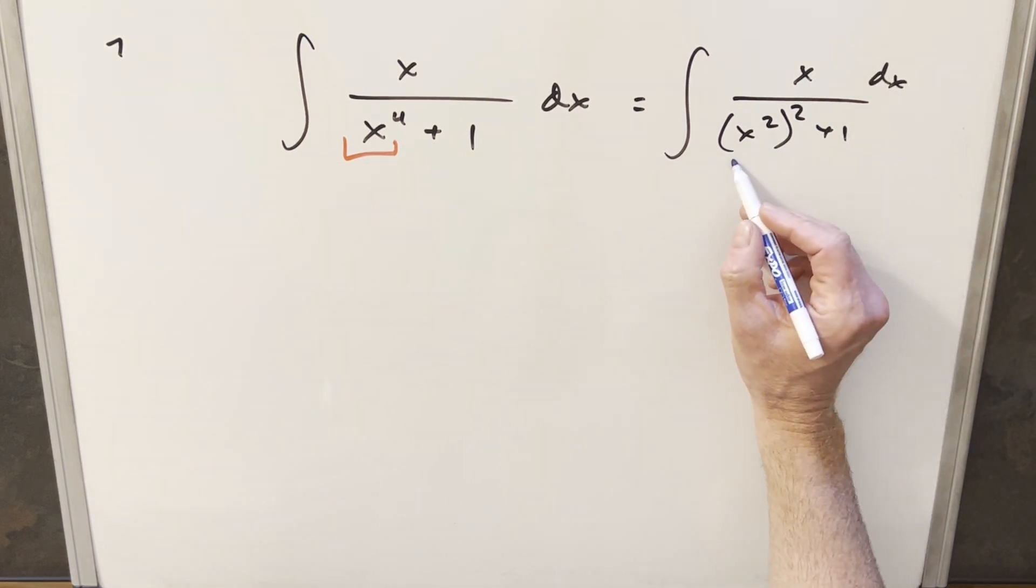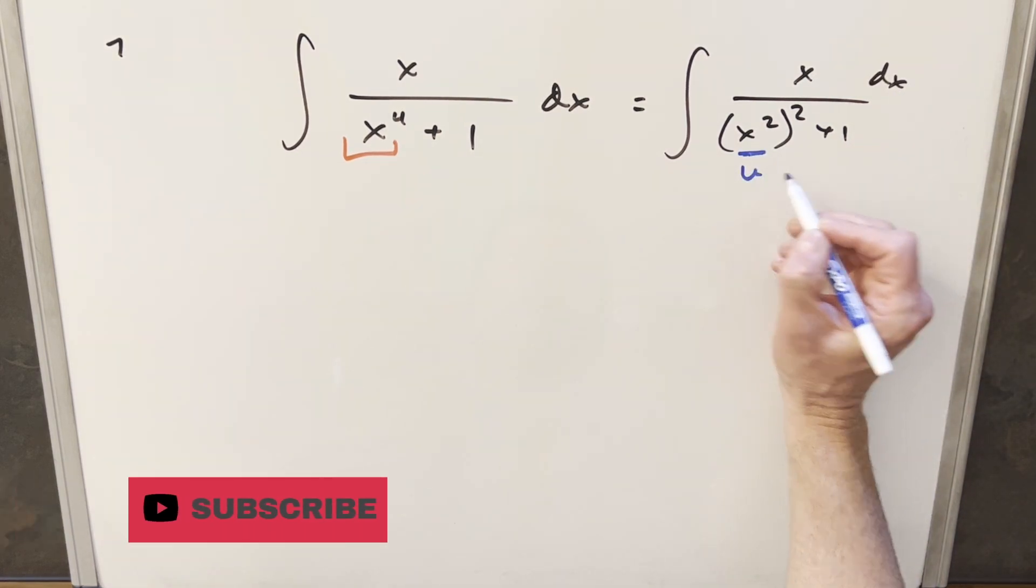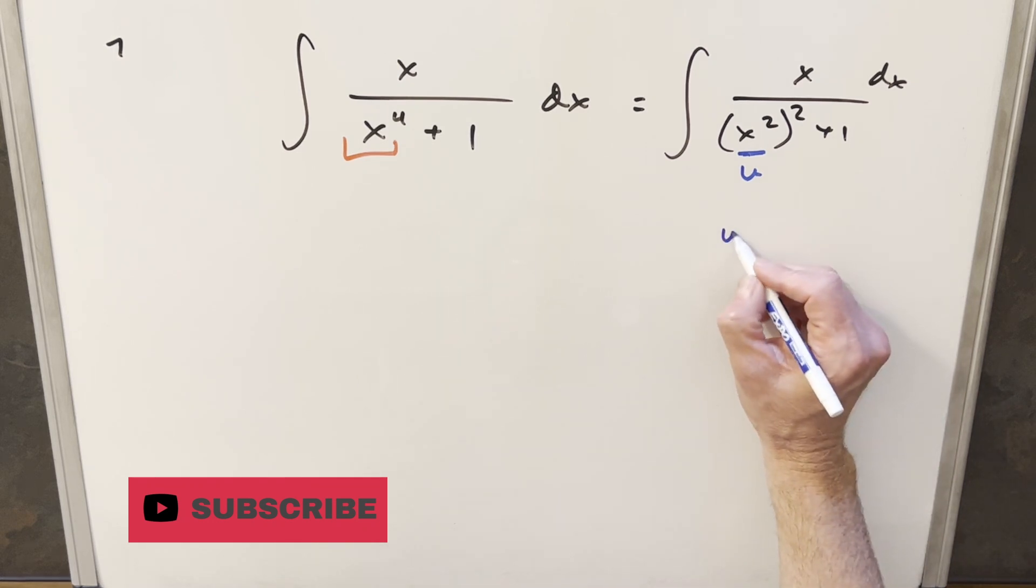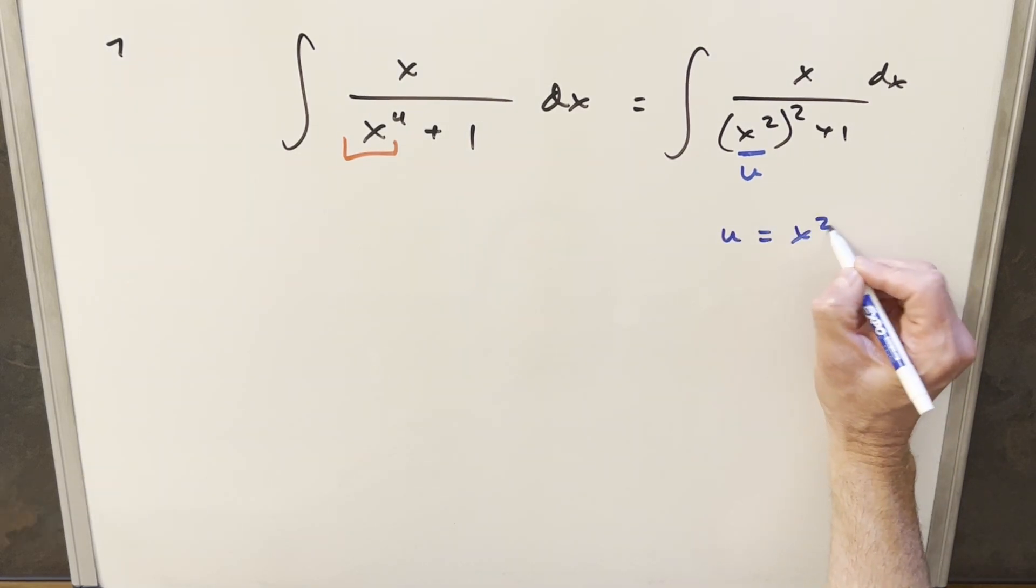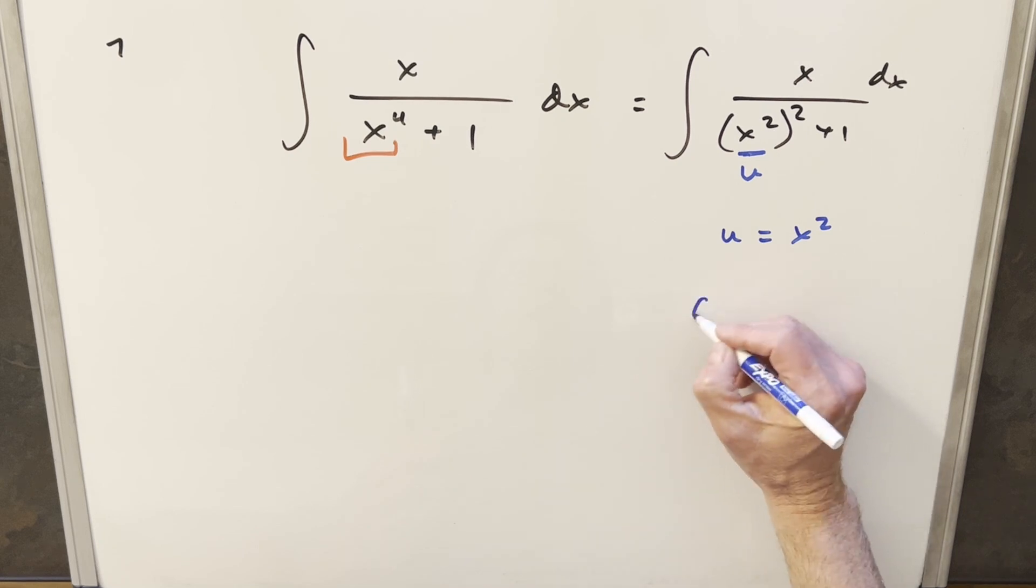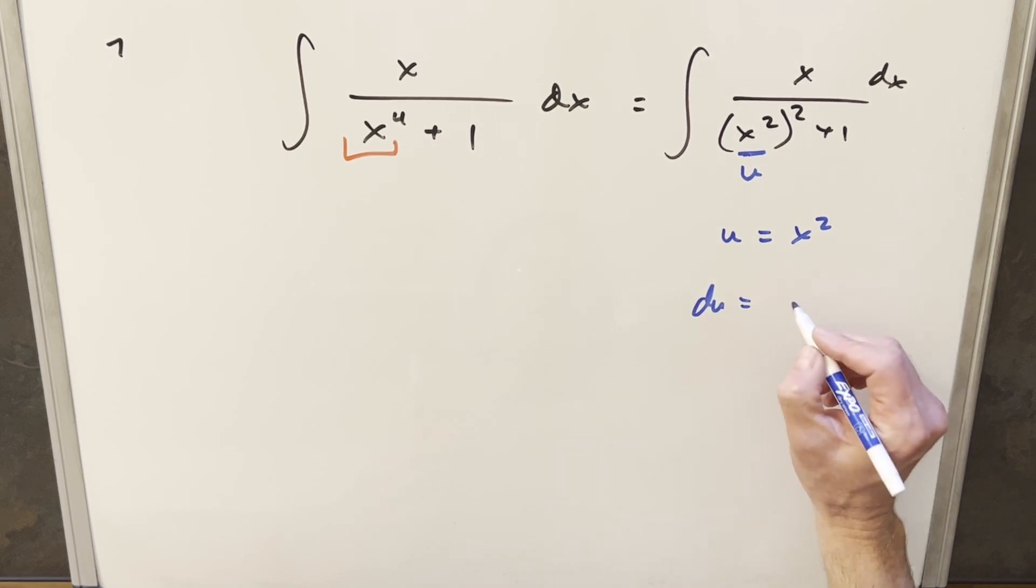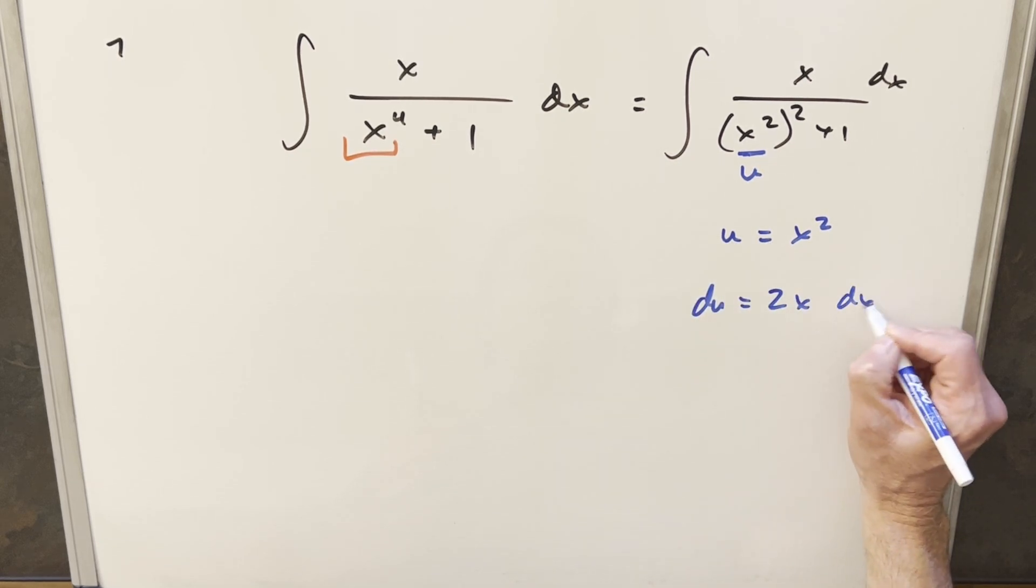And the reason to do it that way, I want to do a u substitution. So now what I'm going to do is just make this piece right here my u. So I'm going to say u equals x squared, take a derivative, and du is going to become the derivative of this is just 2x dx.